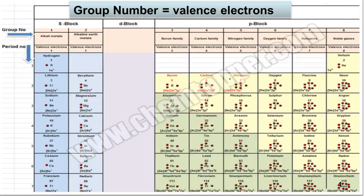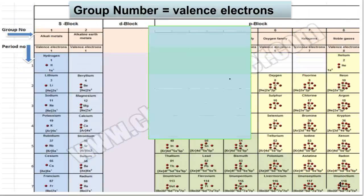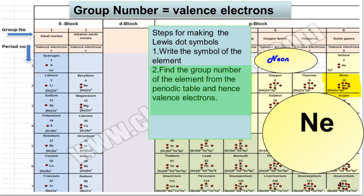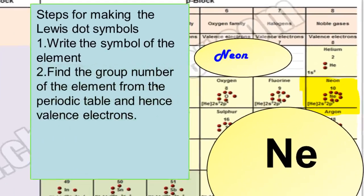When you are writing Lewis dot symbol of any element, the very first step is to write down the symbol of the element. Here, I have selected neon as an example. So, symbol of the neon is NE. The second step is to find the group number of this element from the periodic table so that you can calculate its valence electrons.